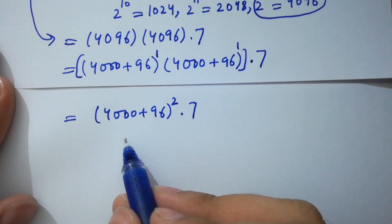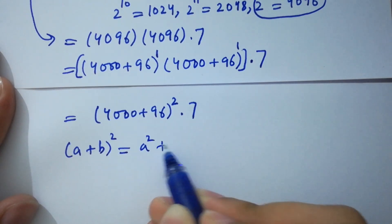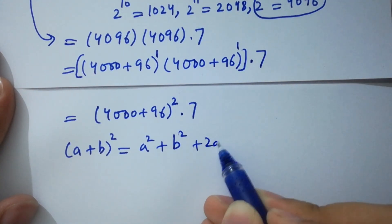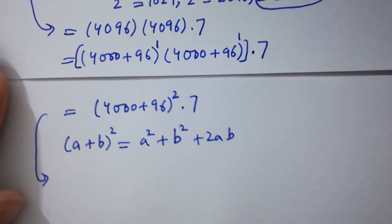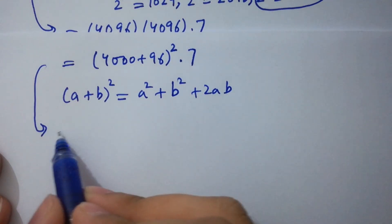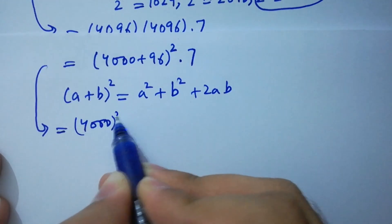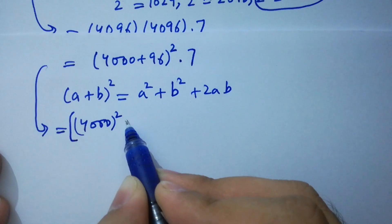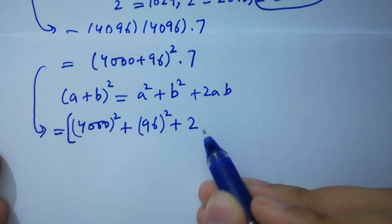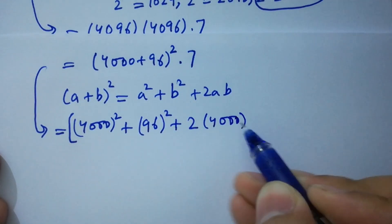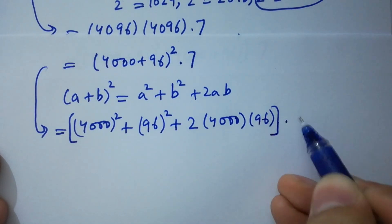In the next step, apply the formula: A plus B whole squared equals A squared plus B squared plus 2AB. So apply it right now with A equal to 4000 and B equal to 96.